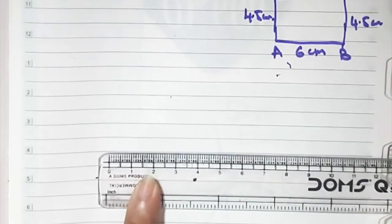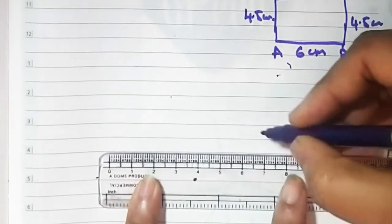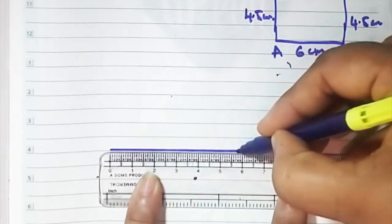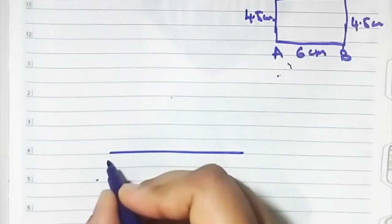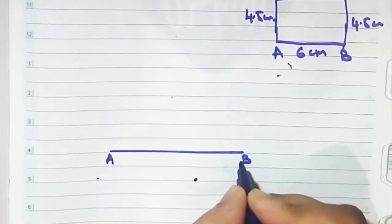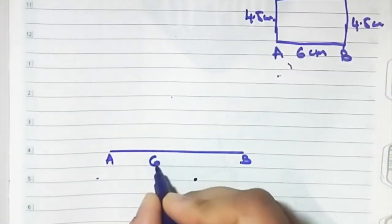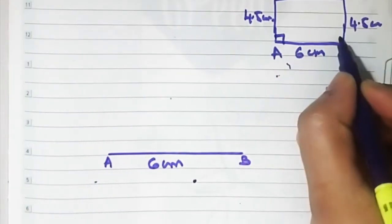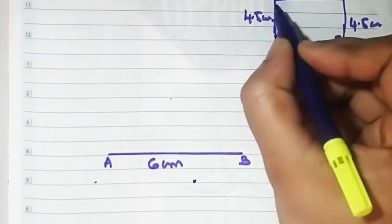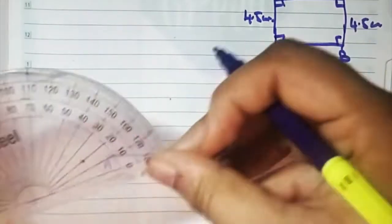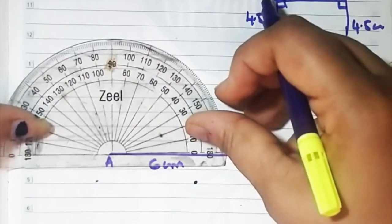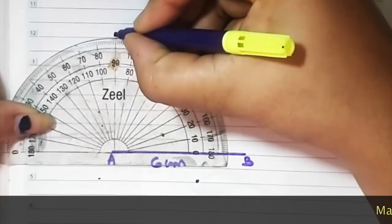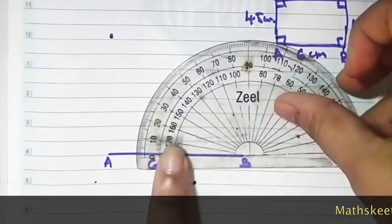Our baseline is 6 cm, from here to here. A, B — 6 cm. It's a rectangle, so all the angles are going to be 90 degrees. Mark 90 degrees from A, and mark 90 degrees from B.